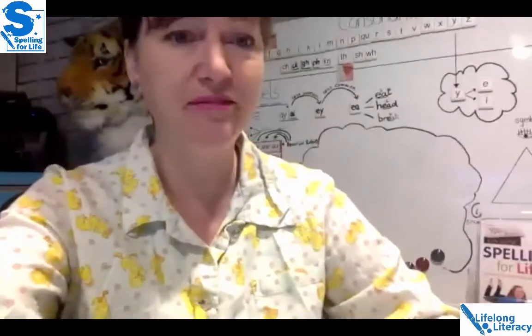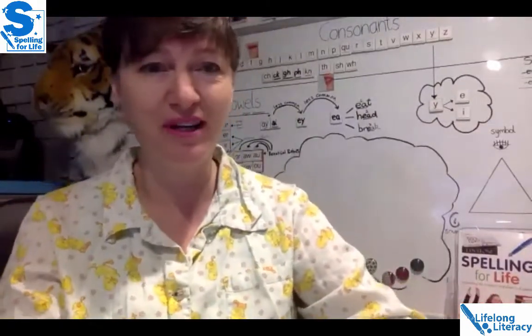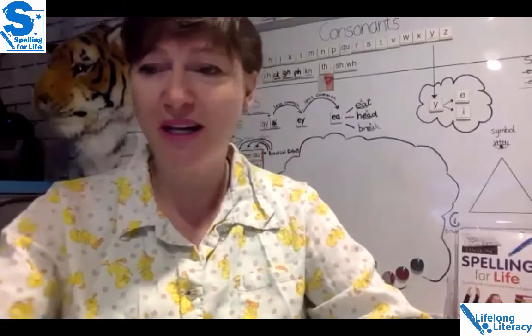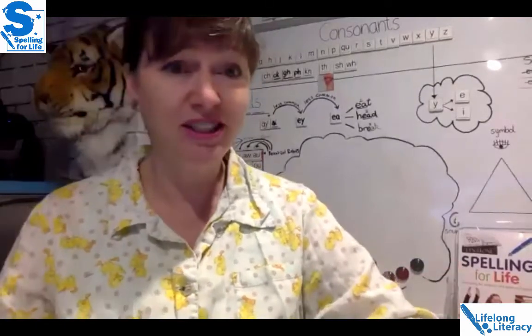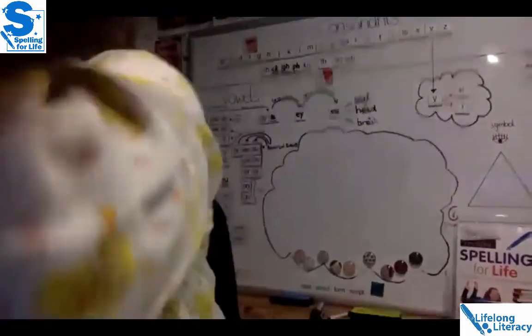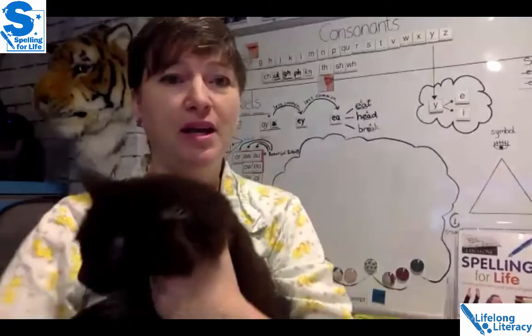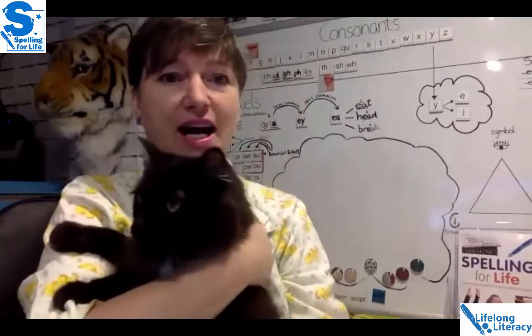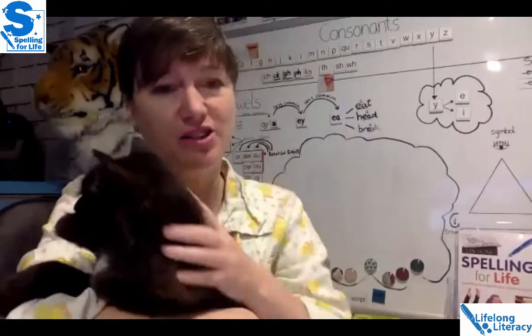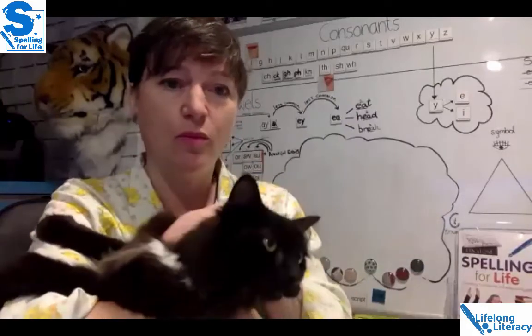It's 11 o'clock, time to begin the lessons. Welcome everybody to Spelling for Life lessons today. I'm Lynn Stone, and today we have a special guest in the studio — his name is Marvel. Marvel is Imogen's cat. We have three cats; Imogen has two cats and Marvel is one of hers.